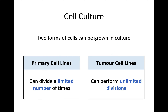There are two main forms of animal cell cultures we can grow in the lab. The first is a primary cell line — like most of our cells, they can divide a limited number of times. However, tumour cell lines, by their very nature, can perform unlimited divisions. There are some historical cases you can research on the use of tumour cell lines in the lab, as some are still being used today and are decades old, because they perform unlimited divisions when provided with the right media.